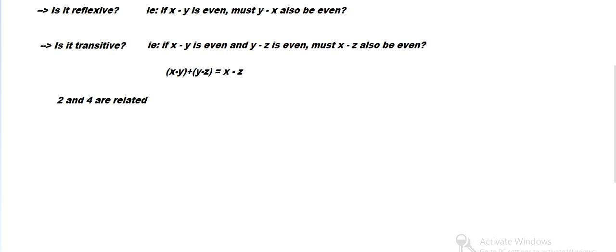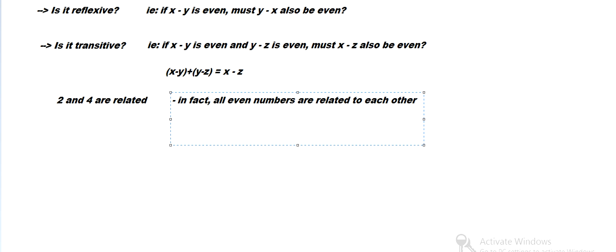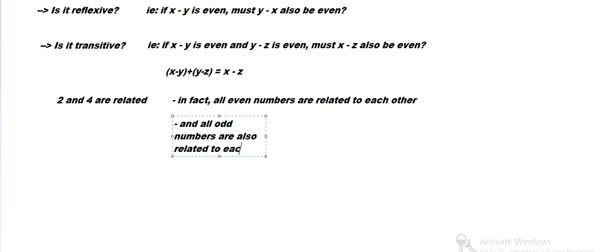Six minus 2 is 4. So you can see, in fact, all even numbers are related to each other. And all odd numbers are also related to each other.